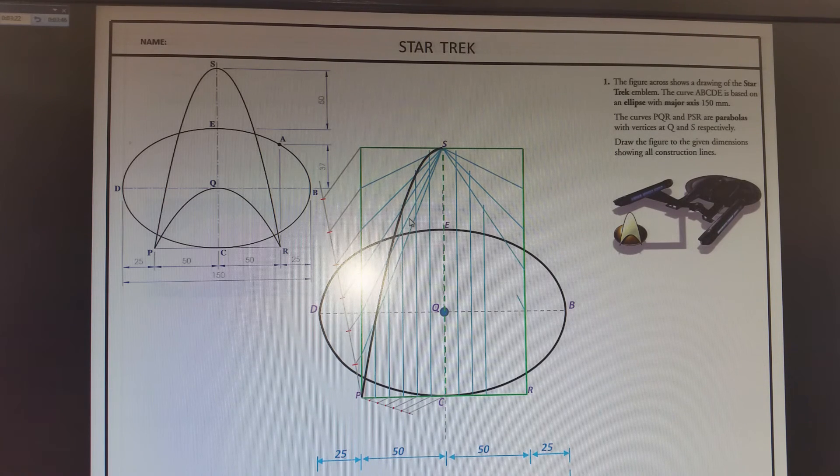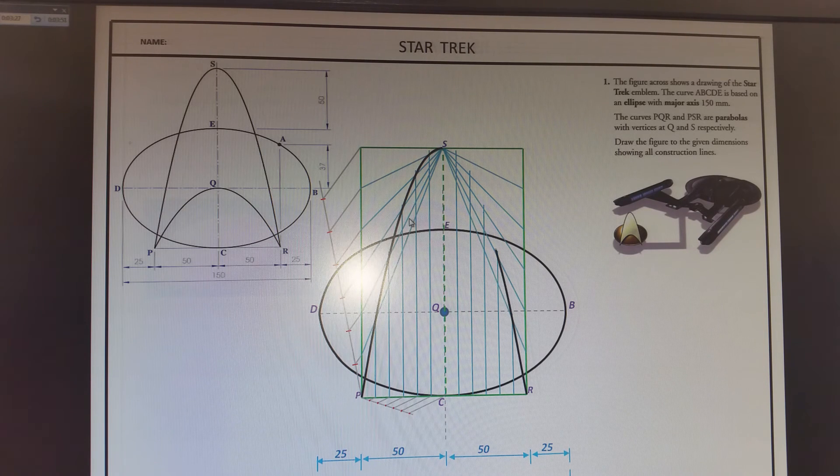The right-hand side is a replica of that. From S, we draw the radiating lines, making it nice and smooth.